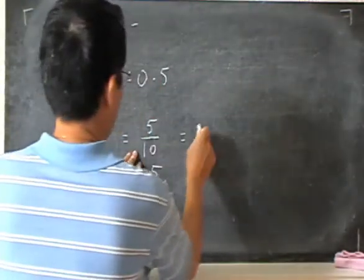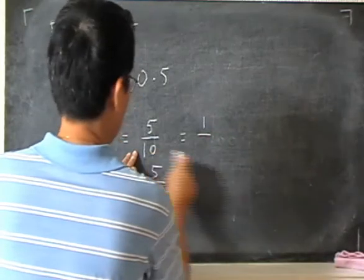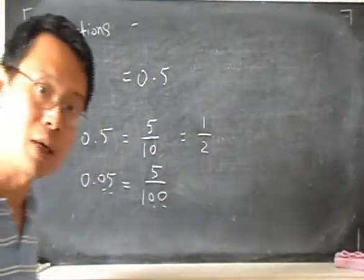5 divided by 5 is 1, and 10 divided by 5 is 2. So that's how we get the half.